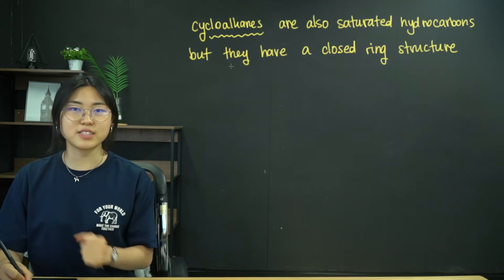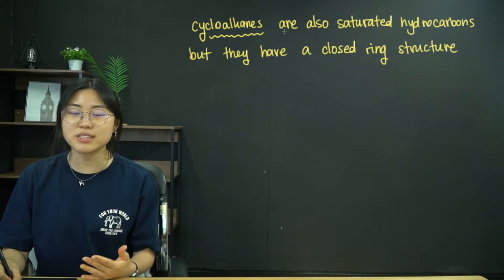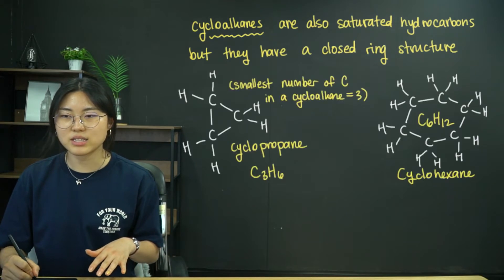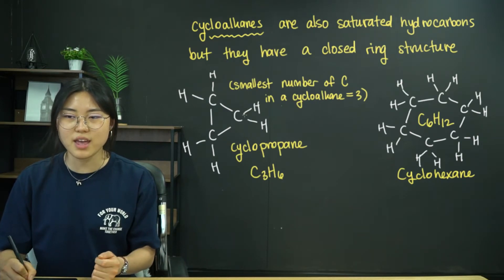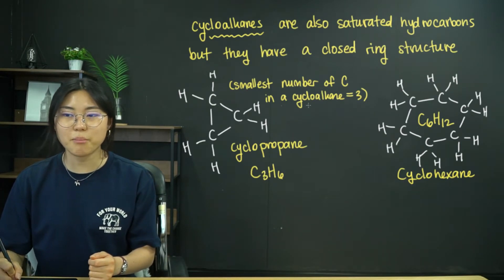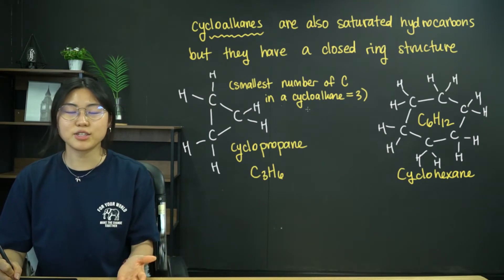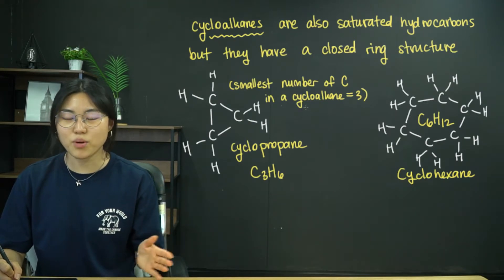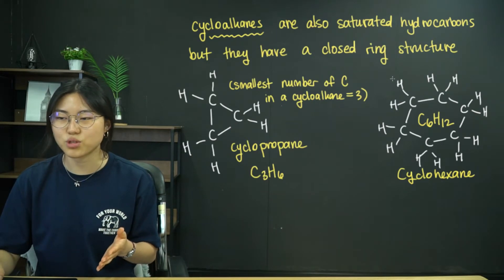We also have cycloalkanes. Cycloalkanes are also saturated hydrocarbons, but they have a closed ring structure. For example, cyclopropane, where there are three carbons in a closed ring structure — this is the smallest number of carbons in a cycloalkane, because you can't have a closed ring structure with two carbons. So you could have cyclopropane, cyclobutane, cyclopentane, and cyclohexane, which I drew over here as well.